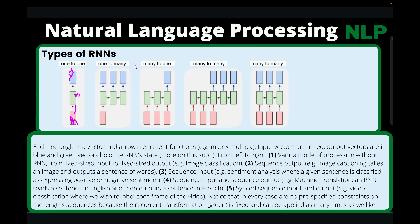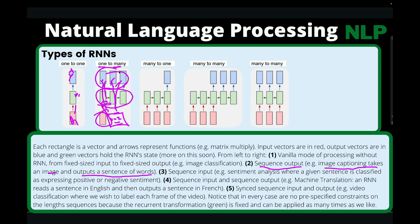Then we have one-to-many, which is a sequence output. For instance, image captioning takes an image and outputs a sentence of words. You can have an image containing maybe human beings, dogs, or a party with people. You feed that image to your recurrent neural network, and it will come up with some description — people laughing, people dancing. So, one single image but several outputs.